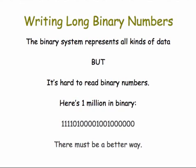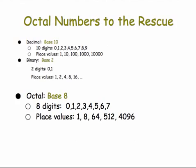Binary numbers are great, but it's hard to read them, especially when they're large. For example, here's 1 million. There must be a better way to represent 1 million — and indeed there is.